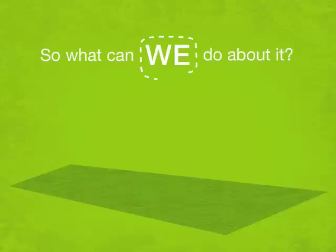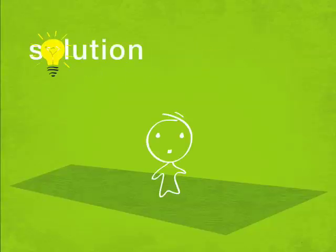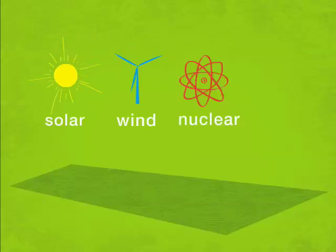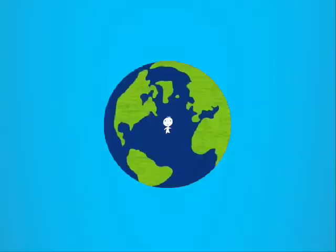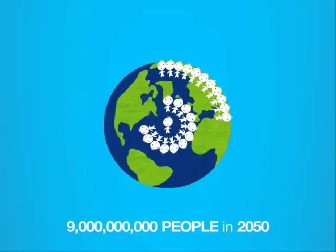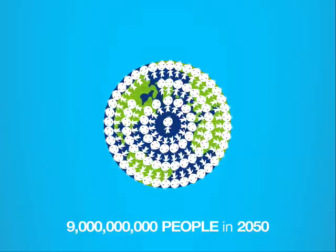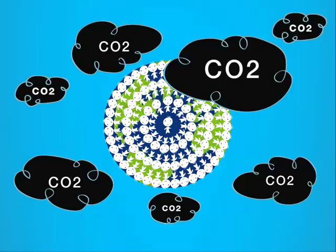So, what can we do about it? One solution is to use energy sources like solar, wind, and possibly nuclear, and use them more efficiently. But with the United Nations projecting 9 billion people in 2050 — 2.2 billion more than today — and a predominance of coal resources worldwide, we can't ignore that fossil fuels are going to continue to be used.